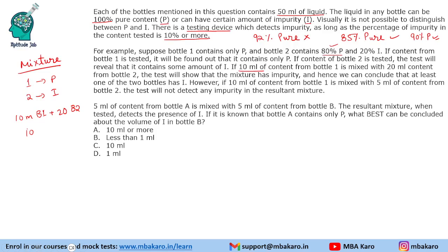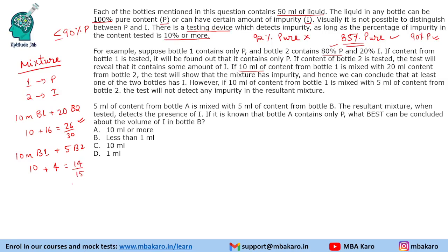In the third scenario, taking 10 ml from bottle 1 (100% pure) and 20 ml from bottle 2 (80% pure): bottle 1 gives 10 ml purity and bottle 2 gives 16 ml purity, totaling 26 out of 30 ml purity, which is less than 90%. So it will be detected as impure. But if you test 10 ml from bottle 1 and 5 ml from bottle 2: that gives 10 ml purity plus 4 ml purity, so 14 out of 15 ml — which is 93% — and that will not be detected. So impurity must be ≥10% to be detected.